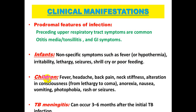In older children, the signs of meningitis include fever, headache, back pain, neck stiffness, alteration in conscious level from lethargy to coma, anorexia, nausea, vomiting, photophobia, skin rash, and seizures. TB meningitis can occur from 3 to 6 months after the initial TB infection.